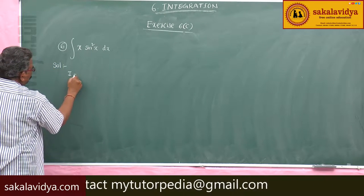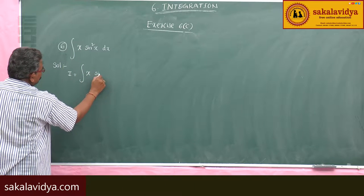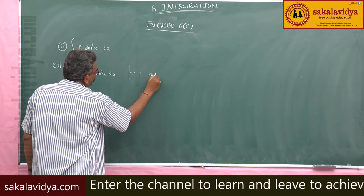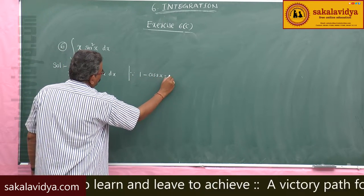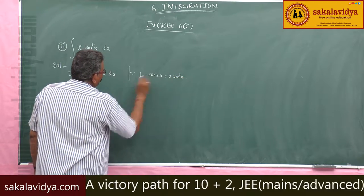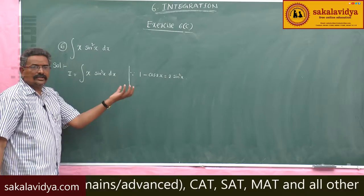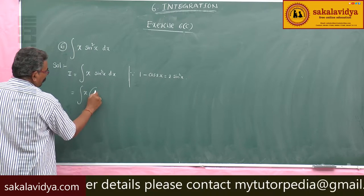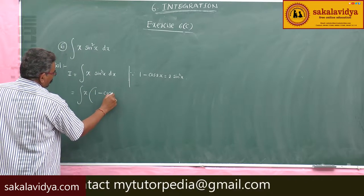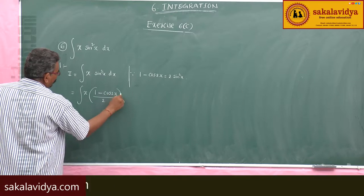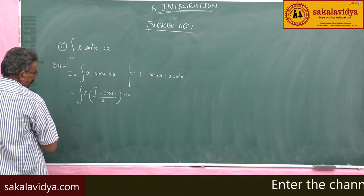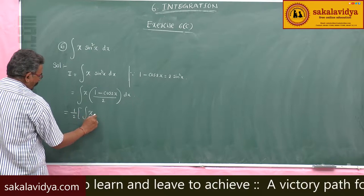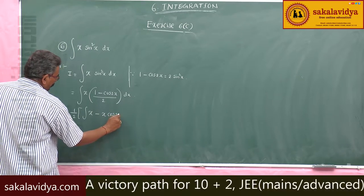I equals the integral of x sin²(x) dx. We know that 1 minus cos(2x) equals 2 sin²(x), so sin²(x) equals (1 minus cos(2x))/2. Therefore we can write the integral as x times (1 minus cos(2x))/2 dx, and taking 1/2 outside we get (1/2) times the integral of (x minus x cos(2x)) dx.